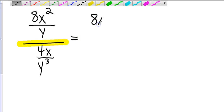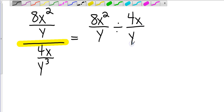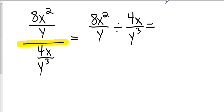8x squared over y divided by 4x over y cubed. Now it looks just a little bit more similar to what we did last week. So take the complex fraction out of it, just make it a regular fraction. And now we're going to keep it, change it, flip it.